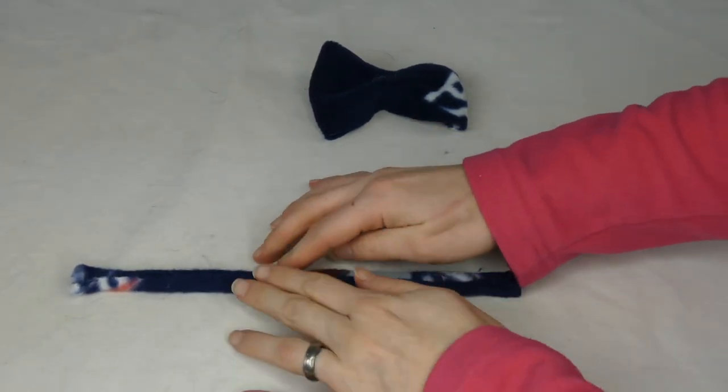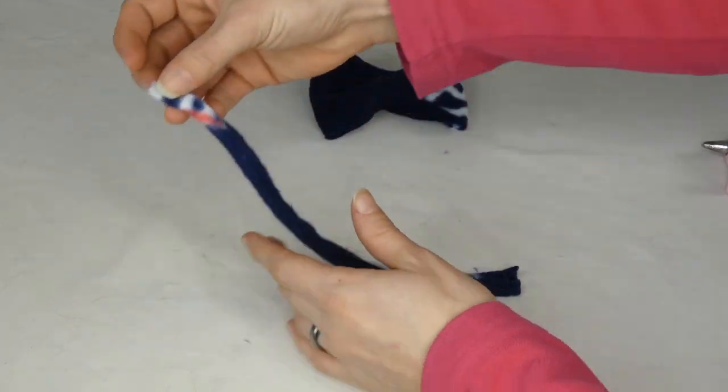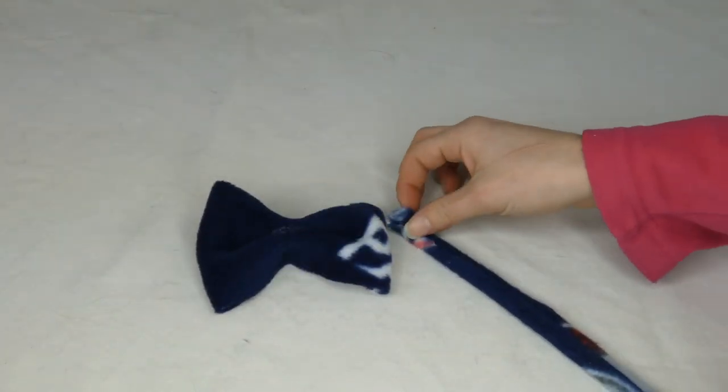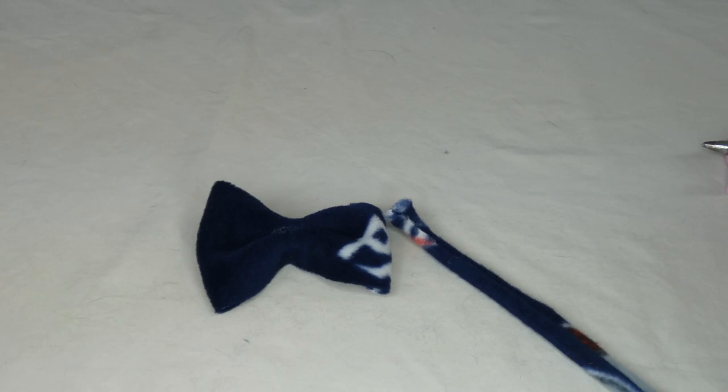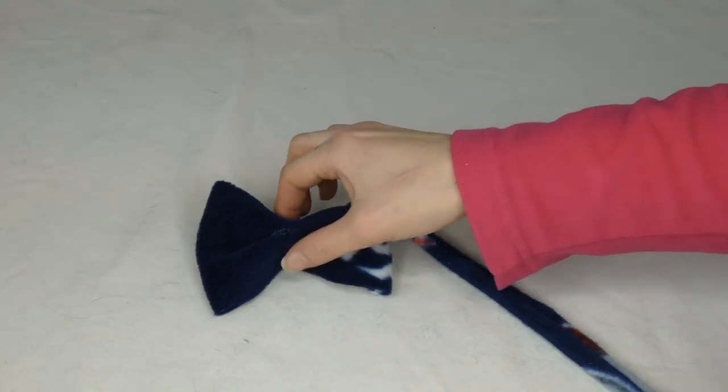Now we have the strip. Both edges are folded into the middle and glued down. And if you haven't guessed, this is going to be the center to go around your bow.